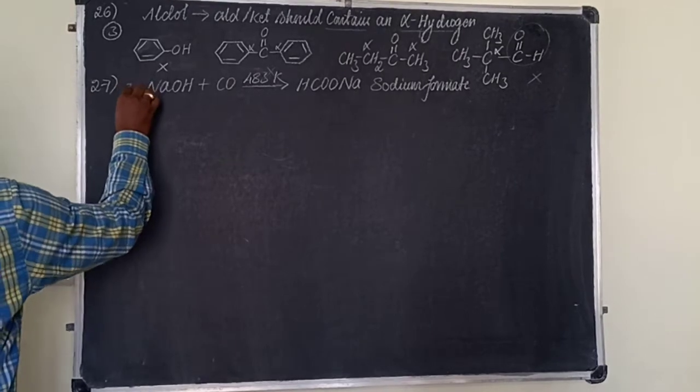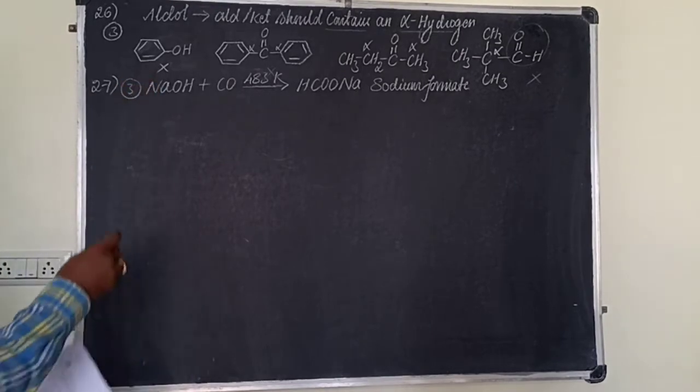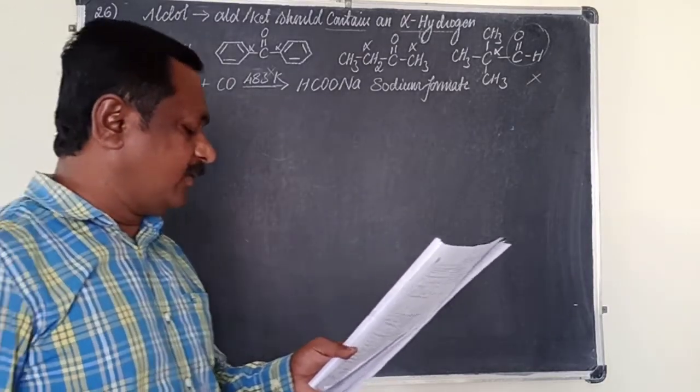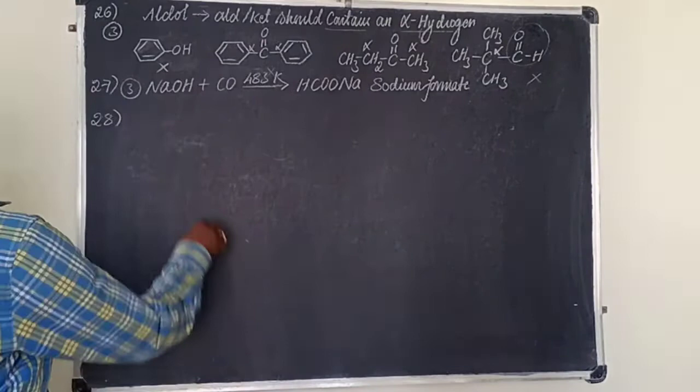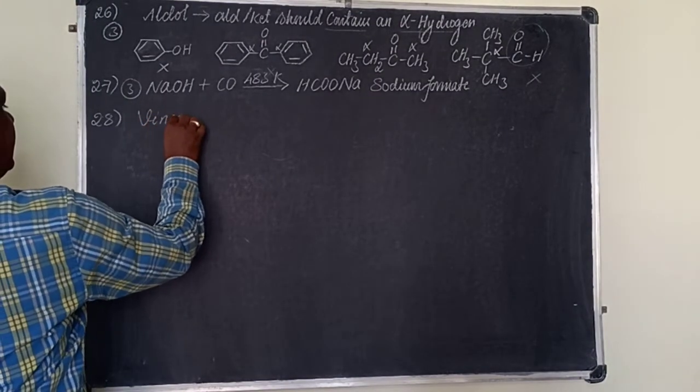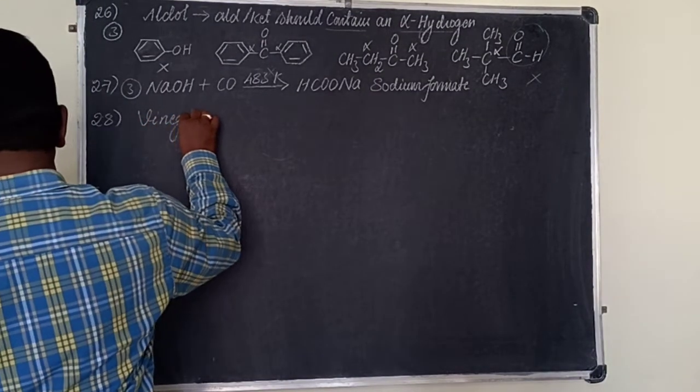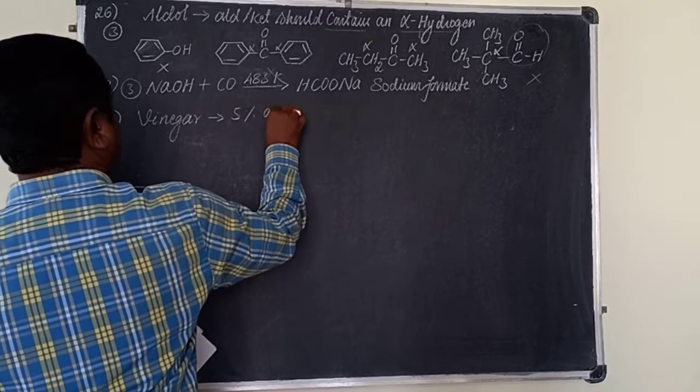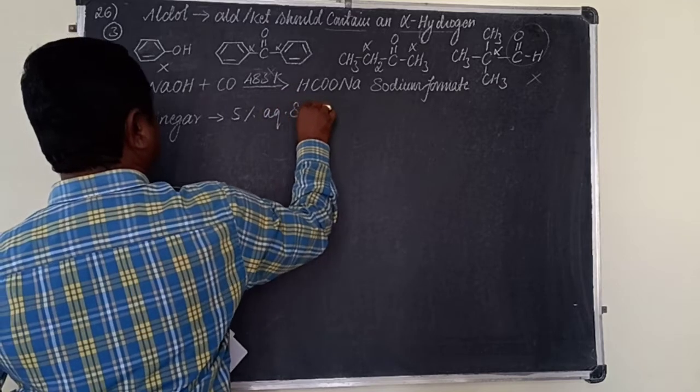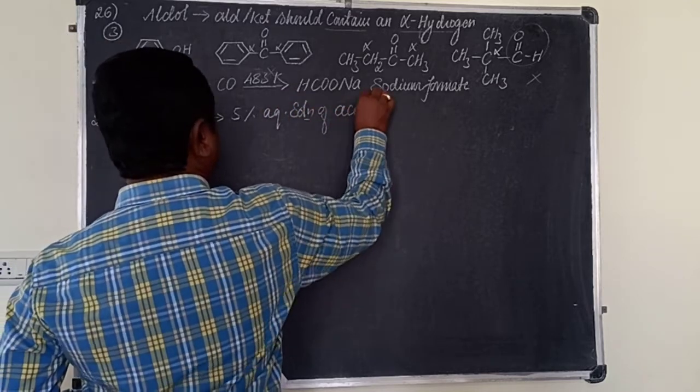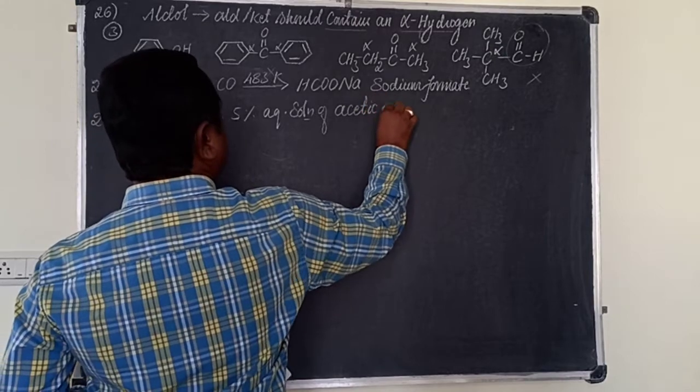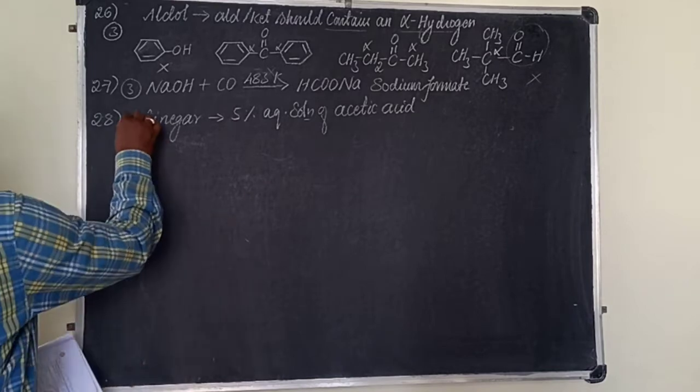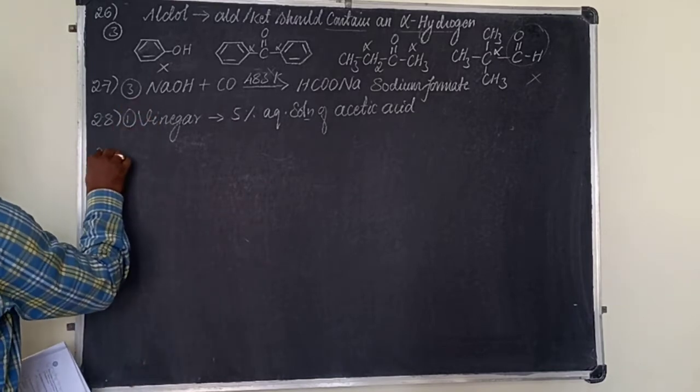Question 28. What is vinegar? Vinegar is 5% aqueous solution of acetic acid. Option 1.